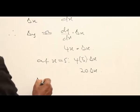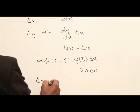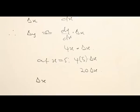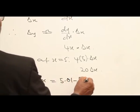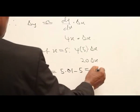And the ΔS is the increase from 5 to 5.01. 5.01 minus 5, which is equal to 0.01.